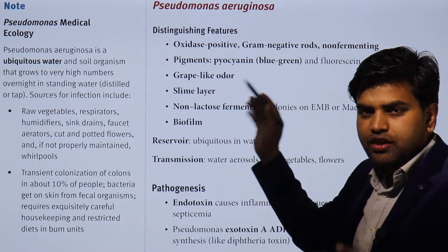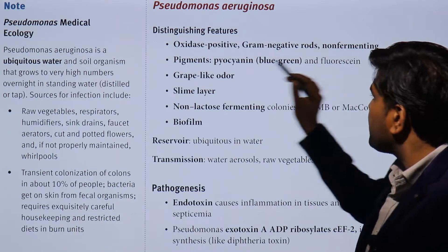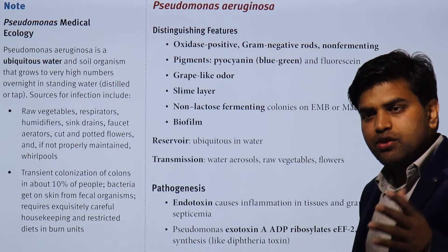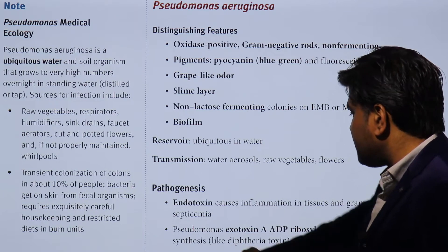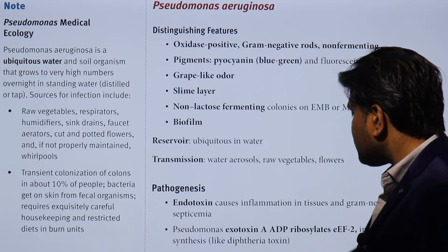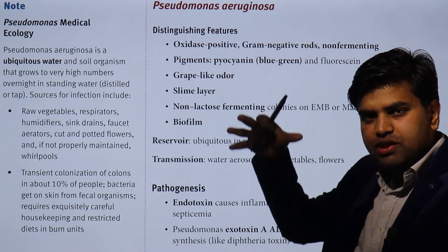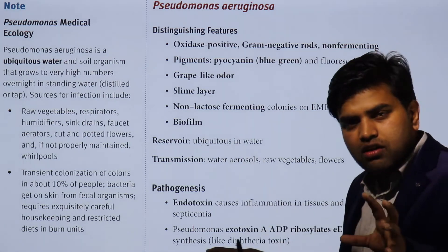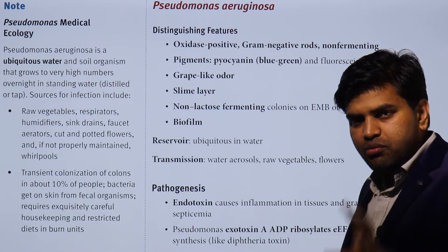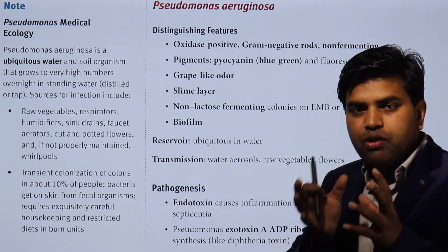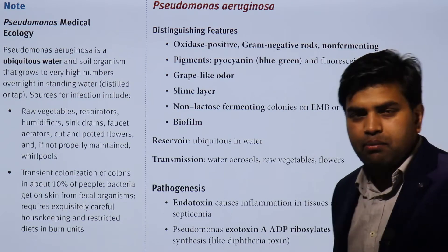Pseudomonas aeruginosa is a gram-negative, non-fermenting, oxidase-positive organism. If you remember the tree diagram in your First Aid USMLE, this organism is among the non-fermenting bacilli. True bacilli are divided into lactose-fermenting and non-lactose-fermenting. Among non-lactose fermenters, there are Pseudomonas, Salmonella, Shigella, and Burkholderia species. Among the non-fermenters, this organism is oxidase positive.